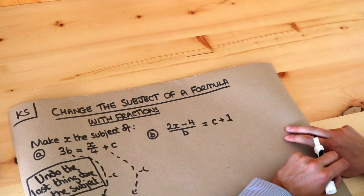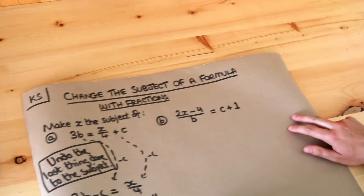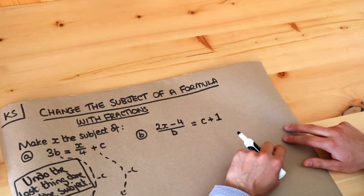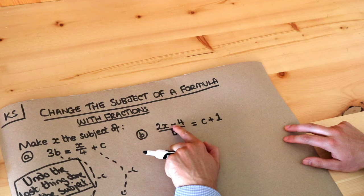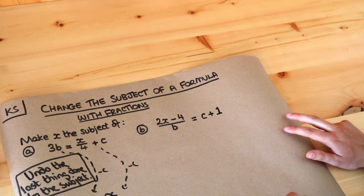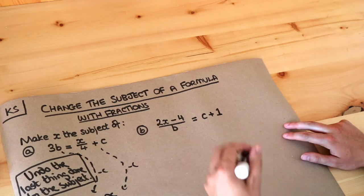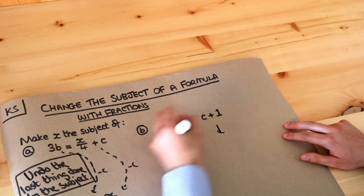What about the second one? Let's think about the story of what's happening to x and then we're going to undo the last thing done to that x, the subject in this case. So x was multiplied by 2, then we subtracted 4, and then we divided that by b. The last thing we did to x was to divide by b, so we have to undo that by multiplying both sides of the equation by b.